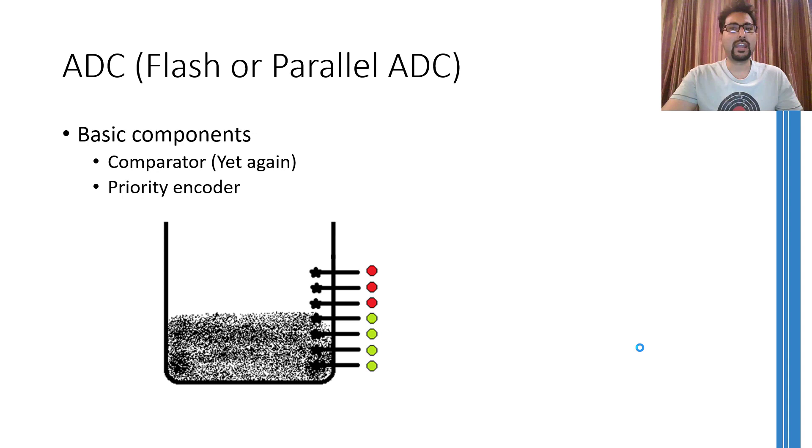For example, if no level sensor is giving you an output, then it means the liquid is lower than the lowermost level sensor. In this case, the output can be 0 0 0 using 3 bits.